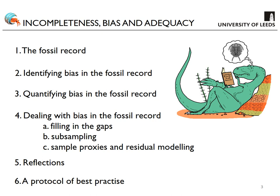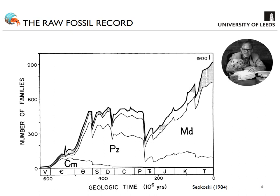The simplest way to discuss completeness, bias, and adequacy in the fossil record is through biodiversity through time — how the diversity of life has changed through the Phanerozoic over the last 550 million years. By this I mean palaeodiversity, diversity, species richness, etc., which I may use interchangeably throughout this talk, but ultimately referring to the same thing.